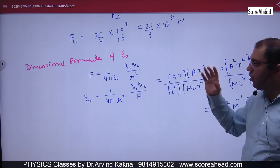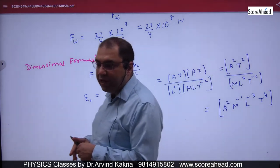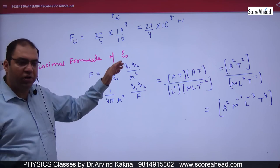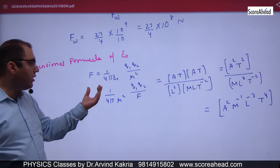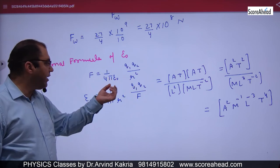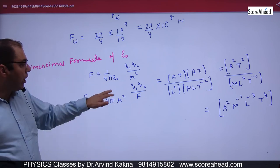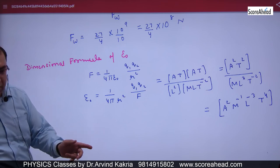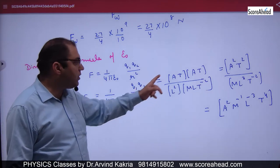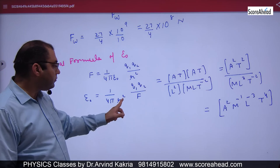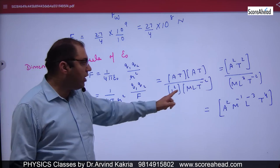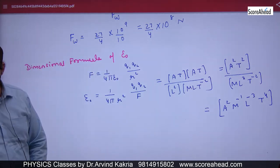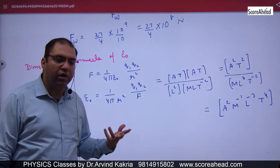To find the dimension formula of ε₀, start with the force formula: F = (1/4πε₀)(Q1Q2/R²). Cross multiply to isolate ε₀. Charge Q = Ampere × time (AT), distance is length (L), and force is MLT⁻². Substituting: ε₀ = (AT)² / (MLT⁻² × L²). Simplify to get the dimensional formula of epsilon naught.